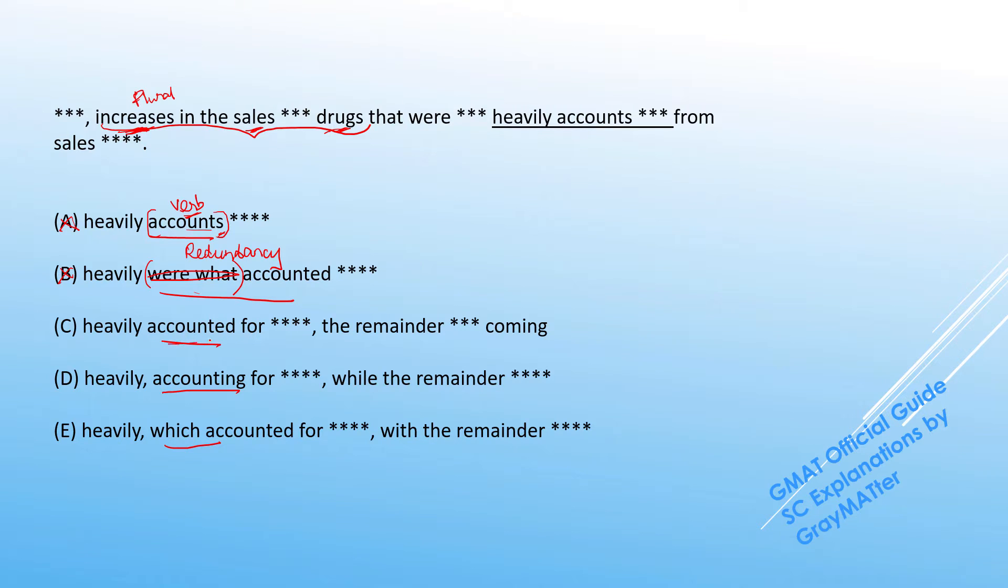The verb is 'accounted,' and there is no subject-verb problem anyway because the verb is written in the past form, and after the clause we have 'the remainder coming from.'